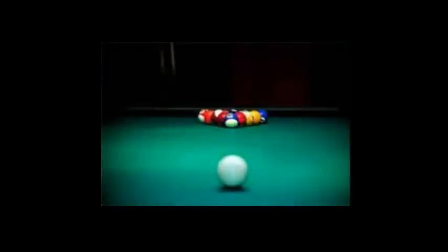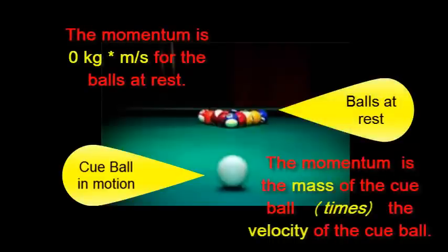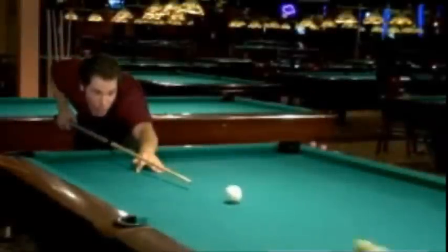You see this a lot in the game of pool. You can transfer the momentum from your cue ball to a ball that's standing still. And you know that the momentum's transferred because the ball that was once standing still is moving, and the ball that was moving has stopped. That would be total transfer of momentum.